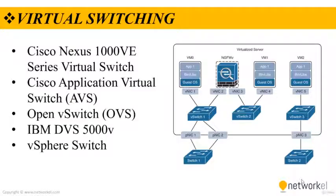A virtual switch is a software-based layer 2 switch that operates like a physical Ethernet switch. A vSwitch enables VMs to communicate with each other within a virtualized server and with external physical networks through the physical network interface cards. Multiple vSwitches can be created under a virtualized server, but network traffic cannot flow directly from one vSwitch to another within the same host, and vSwitches cannot share the same PNIC. Some of the most popular vSwitches include the Cisco Nexus 1000 VE, Cisco Application Virtual Switch, Open vSwitch, IBM DVS, and vSphere Switch.